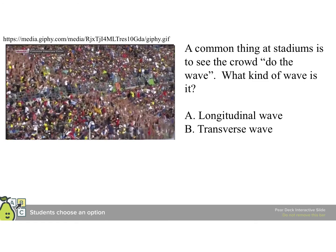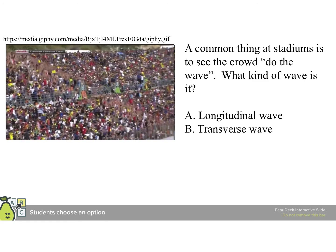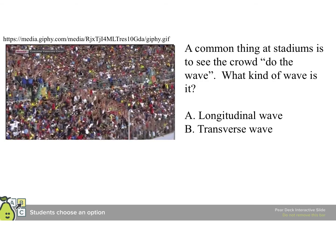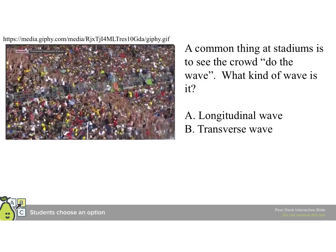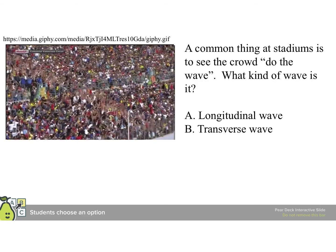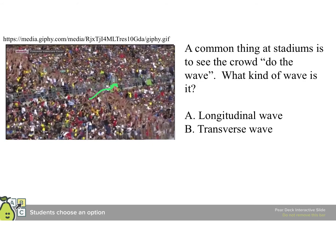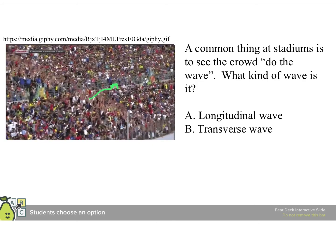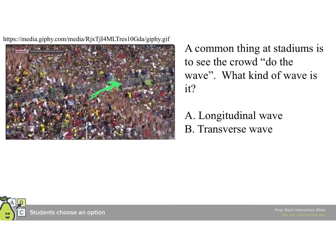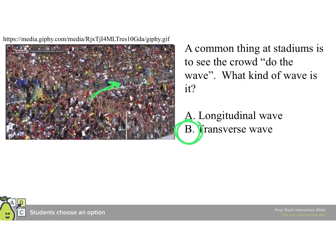And again, if we watch the people, they stand up and sit down. They don't move along the direction. Let's watch that one more time. The wave itself is moving like that. You can see as it moves across. But no person walks that way. They just go up and down. So this is a transverse wave.